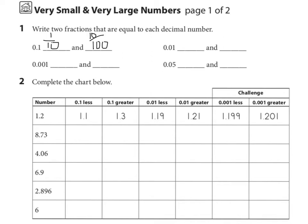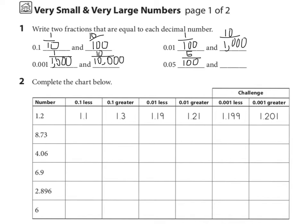The next decimal is one hundredth, and so the fraction we write is 1 over 100. An equivalent one: multiply both top and bottom by 10 to get ten one-thousandths. The next one reads as one thousandth, so we have 1 over 1000, and multiplying top and bottom by 10 gives ten ten-thousandths. The last one is five hundredths, so we have 5 over 100, and multiplying by 10 gives 50 one-thousandths.